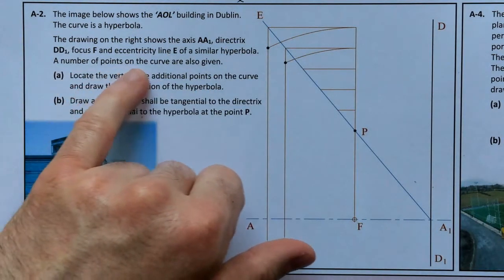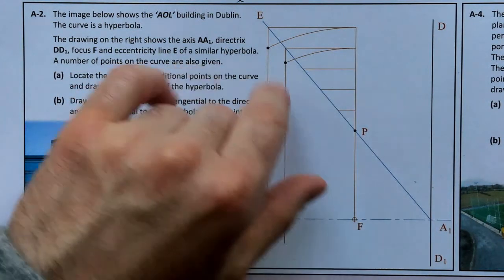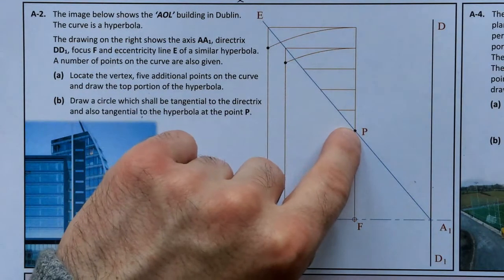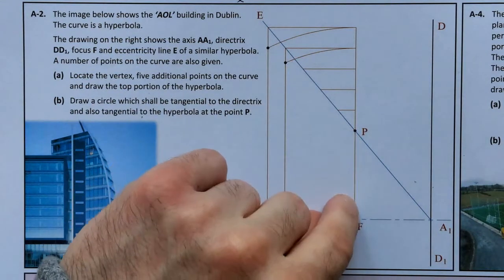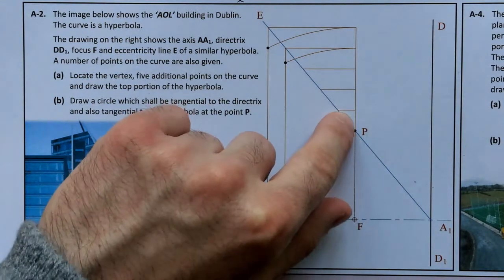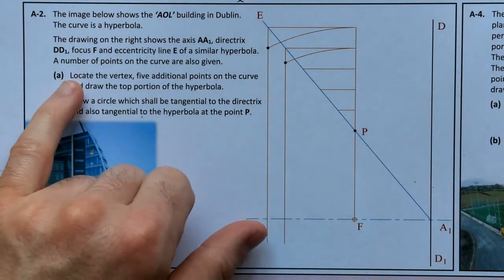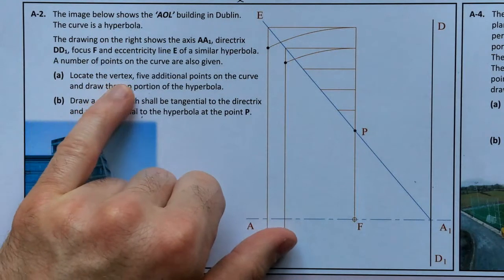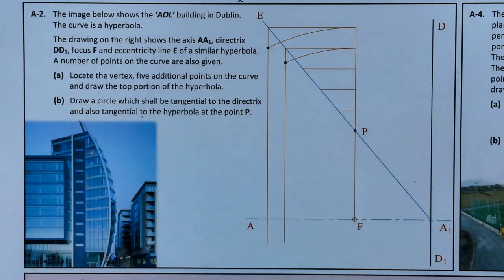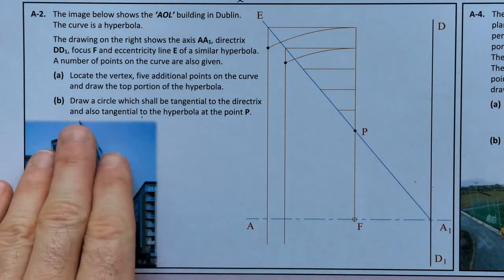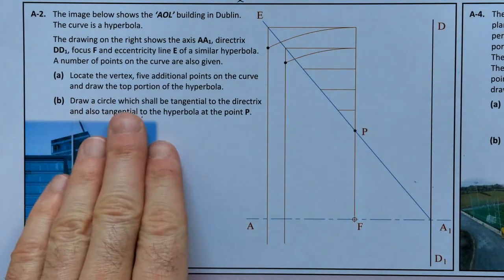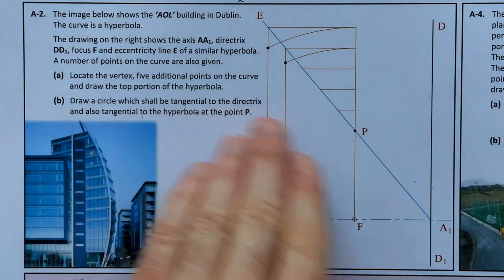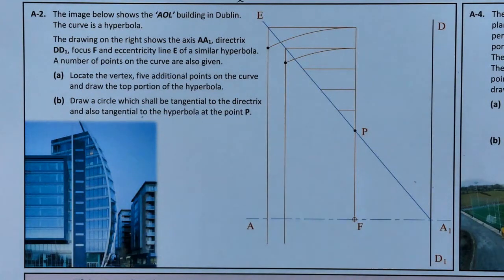There's always going to be a point directly above the focus. Part A says: locate the vertex, five additional points on the curve, and draw the top portion of the hyperbola. Part B says: draw a circle which shall be tangential to the directrix and also tangential to the hyperbola at point P.